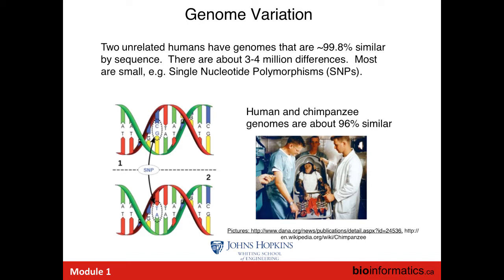If we sequence any pair of individuals in this room and compare the genomes, we'll find differences at about 0.2% of positions. Most of these are small differences like single nucleotide polymorphisms. We know that these SNPs are crucially linked to observable differences — there are SNPs that control things like our height, where millions of them of very weak effect go into controlling a complex trait, and also SNPs that control more simple traits like eye color. By comparing enough samples we build up statistical significance to say this difference is linked to this trait.